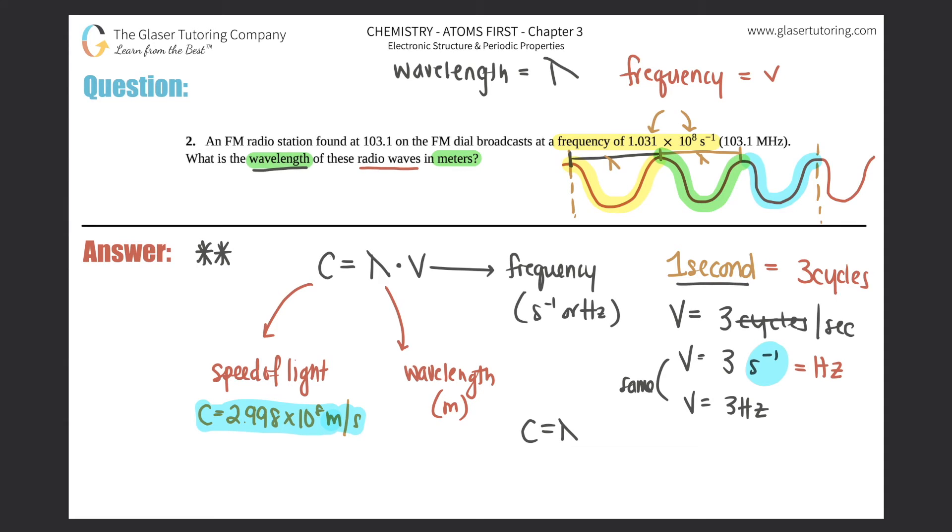C equals wavelength times frequency. 2.998 times 10 to the eighth equals lambda times 1.031 times 10 to the eighth. And then all you got to do is just divide. 1.031 times 10 to the eighth. Cancel that off. I'm going to put the answer over here.